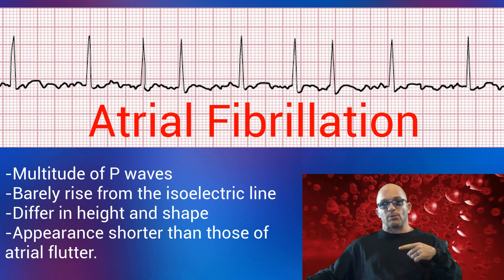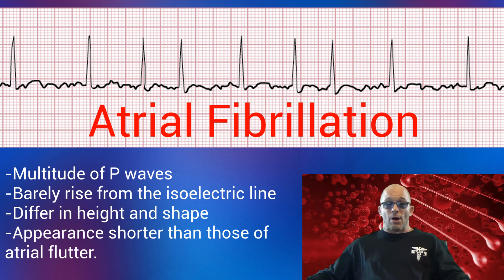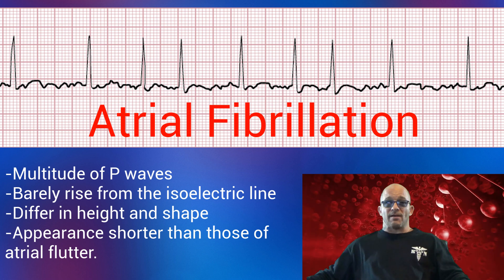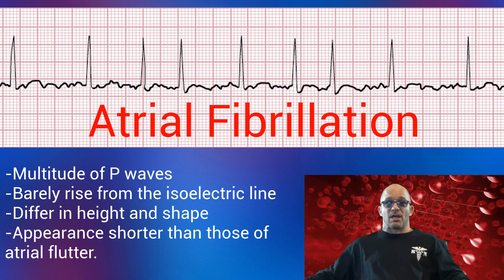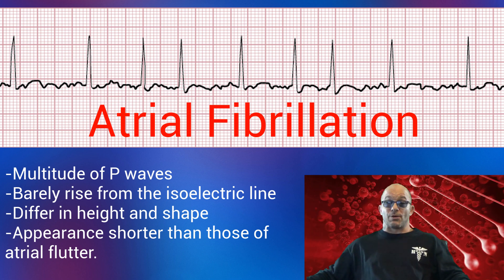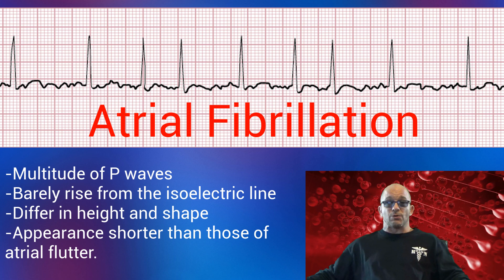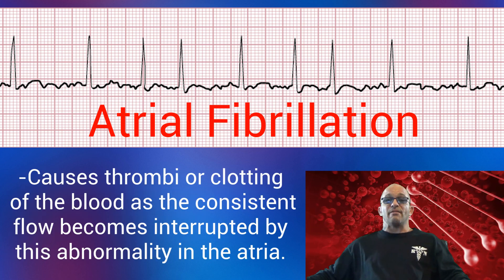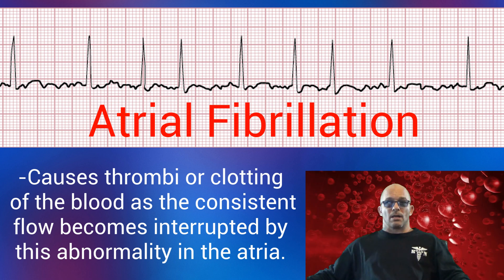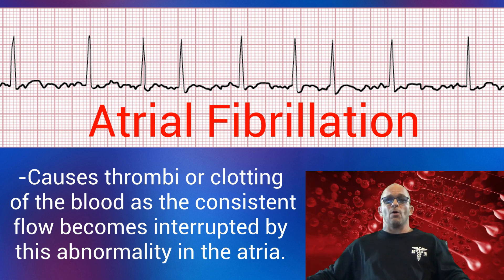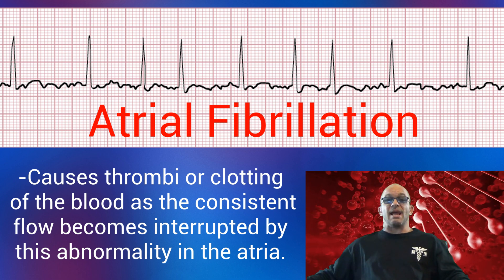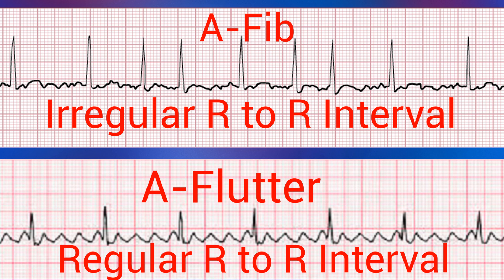As we can see in this rhythm, this is atrial fibrillation. There are no distinct P waves. The multitude of P waves barely rise from the isoelectric line and they differ in height and shape from those observed in atrial flutter, appearing shorter than the sawtooth pattern. A-fib is notorious for causing thrombi, or clotting of blood, as the consistent flow becomes interrupted by this abnormality in the atria. The R-to-R interval may be regular in atrial flutter, but during atrial fibrillation, the R-to-R interval will always be irregular.